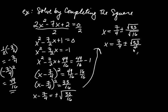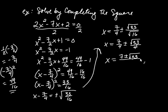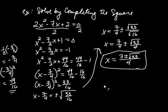Since both terms have the same denominator, we write x as a single expression: x equals 7 plus or minus the square root of 33, all over 4. These are my two answers. That's how we solve by completing the square. Next, we're going to be solving quadratic equations generally by completing the square, and we'll find that gives rise to a formula known as the quadratic formula.